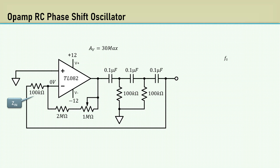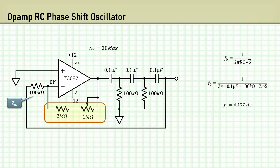The frequency is still around 6.5 hertz. I set the maximum gain with a potentiometer to 30. The required gain for the Barkhausen criteria is 29. We will see in the lab the effects of the various gains.